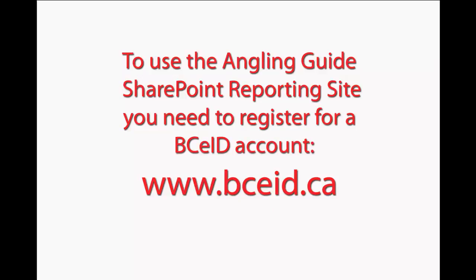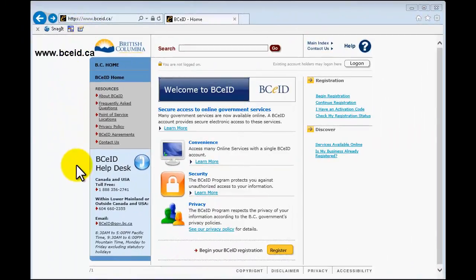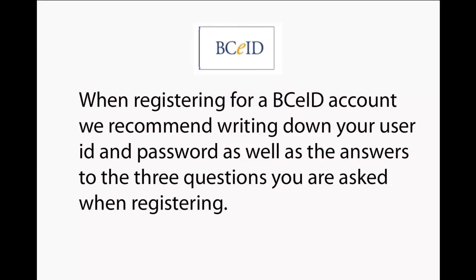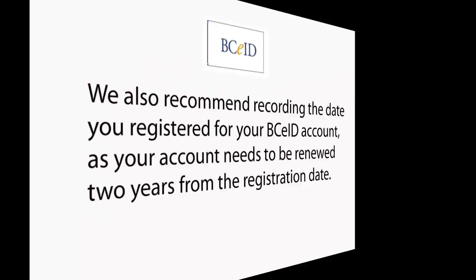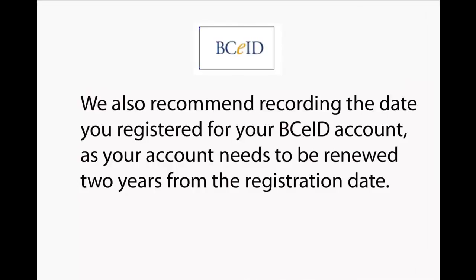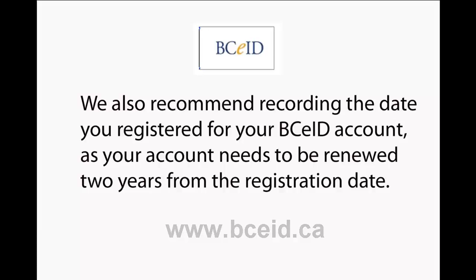The first step is registering a free BCEID account. A BCEID account is required to enable you to log in to the Angling Guide reporting site and is available at www.bceid.ca. Simply follow the prompts on the BCEID website and remember to write down and save in a secure location both your account username and password as well as the answers to your security questions. We recommend also recording the date that you registered for your account, as you will need this information to renew your password two years from your original registration date. Your BCEID account will require a password renewal every two years to remain active and permit you access to our reporting site. Simply return to www.bceid.ca to renew your password at or before this two year interval.